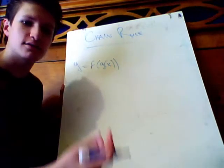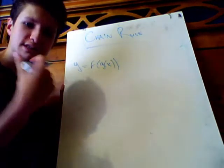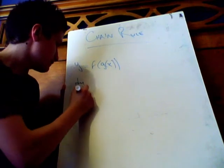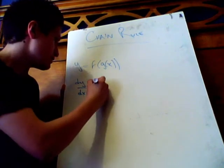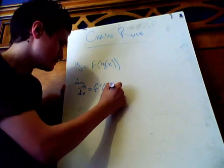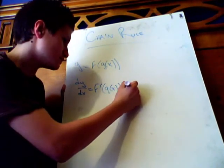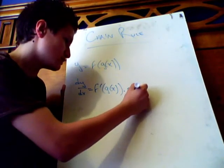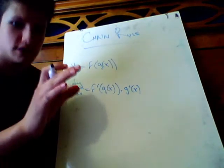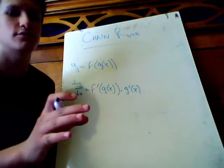Well, there's a simple rule, and it writes out like this. dy/dx equals f prime of g of x times g prime of x. This can be a little confusing. I know this. It can be very confusing at first.